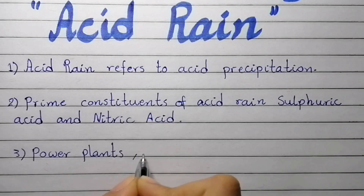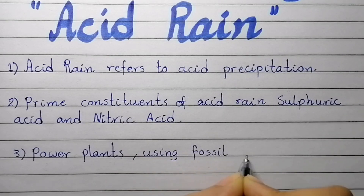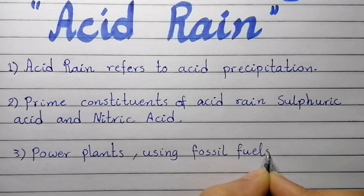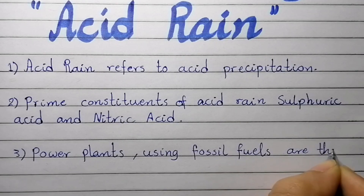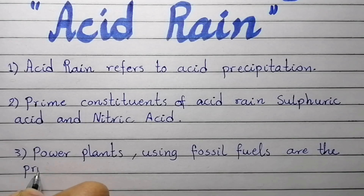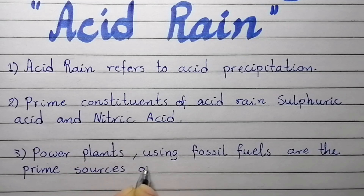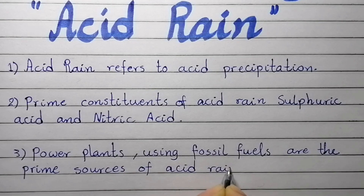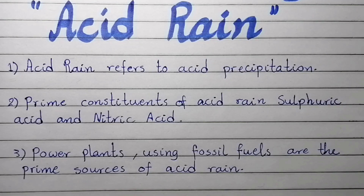Point number three: power plants using fossil fuels are the prime sources of acid rain.